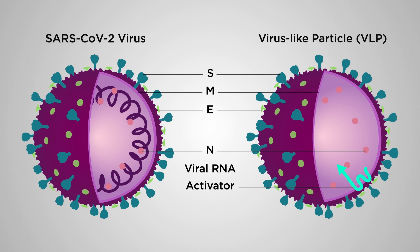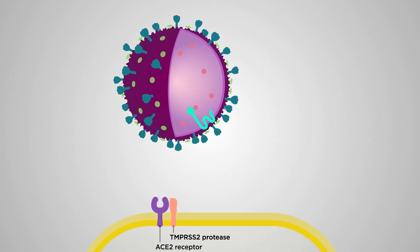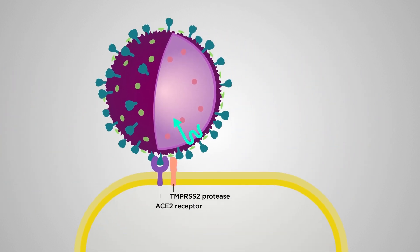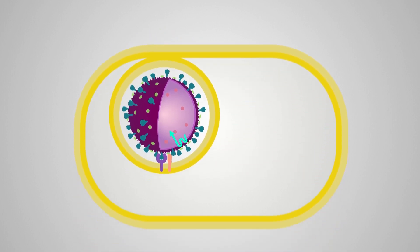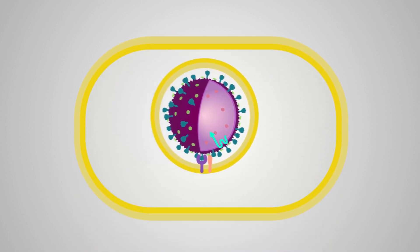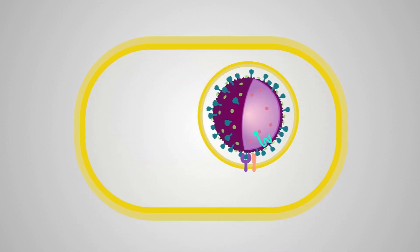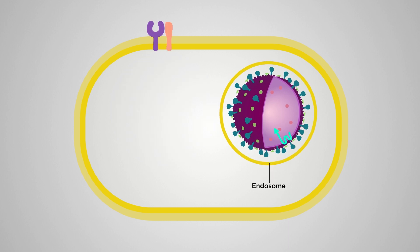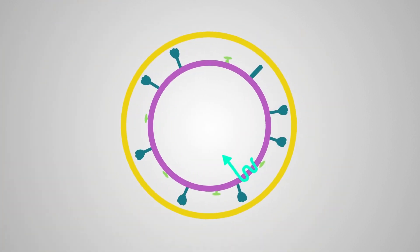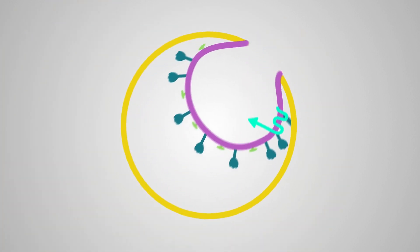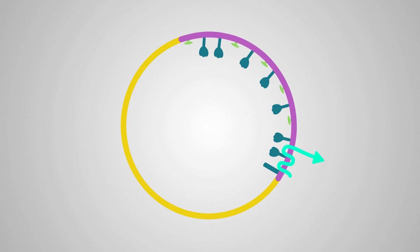VLPs use their spike proteins to attach to an ACE2 receptor on the surface of a target cell. The VLPs are then taken up by the cell and end up in the endosomes. The particle fuses with the endosomal membrane and the activator protein becomes exposed to the cytoplasm.